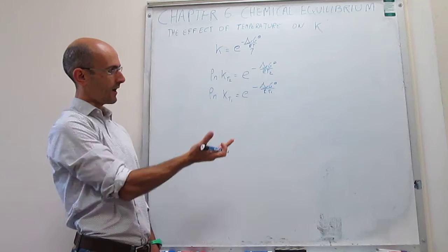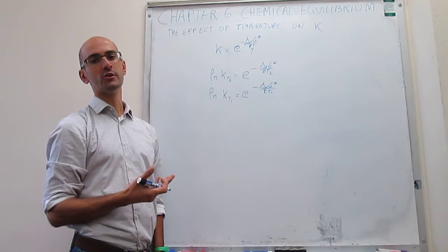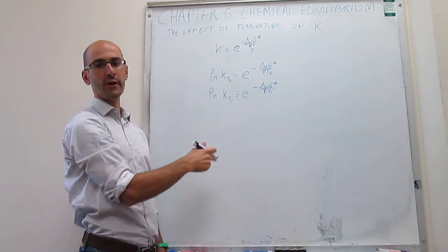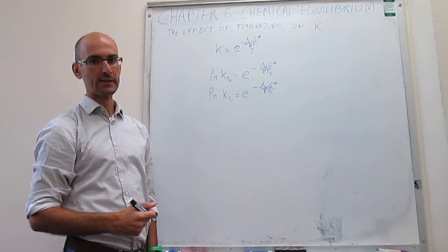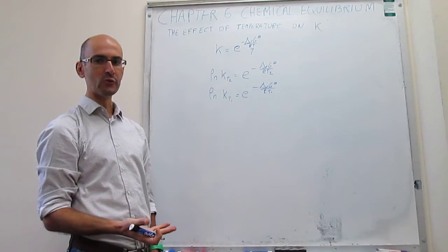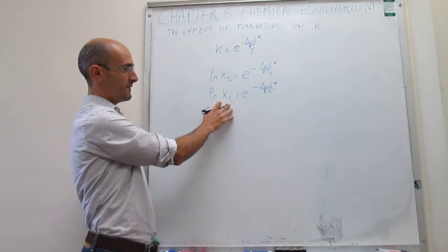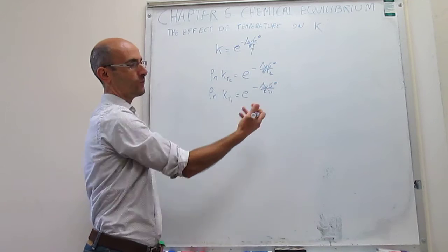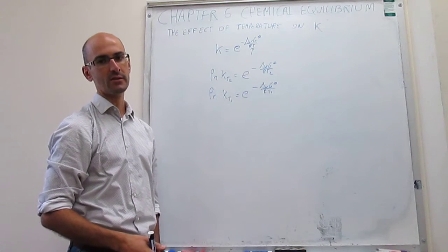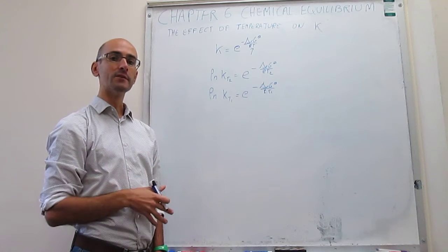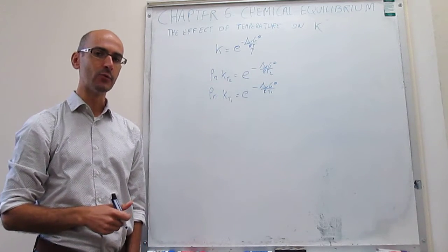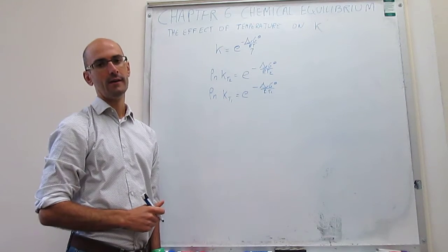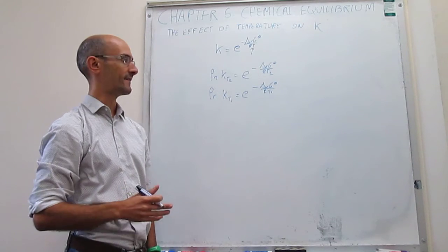Consolidating this expression allows us to calculate the equilibrium constant at, for example, 310 Kelvin (physiological temperature) from the equilibrium constant at 298 Kelvin. We use 298 Kelvin as the reference because we have tables from which we can calculate the reaction Gibbs energy from the Gibbs energies of formation of species, and those are typically given at 298 Kelvin. That means we can always calculate the equilibrium constant at 298 Kelvin.